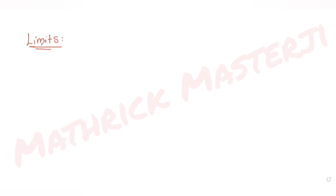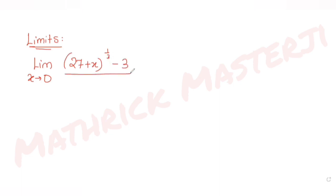Hi guys, I hope you are all doing well. Today's question is from the topic of limits. The question tells us to find the value of a limit where x tends to 0, and the expression given is: (27 + x)^(1/3) minus 3, divided by 9 minus (27 + x)^(2/3).